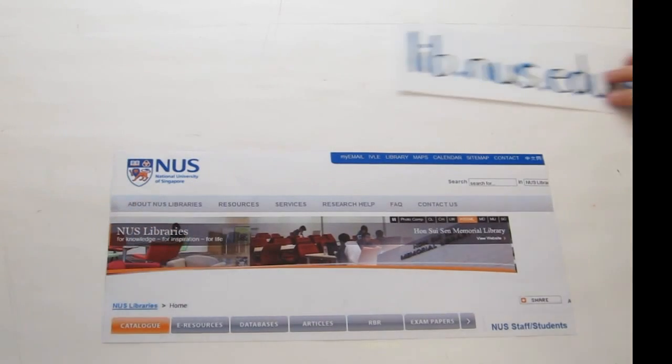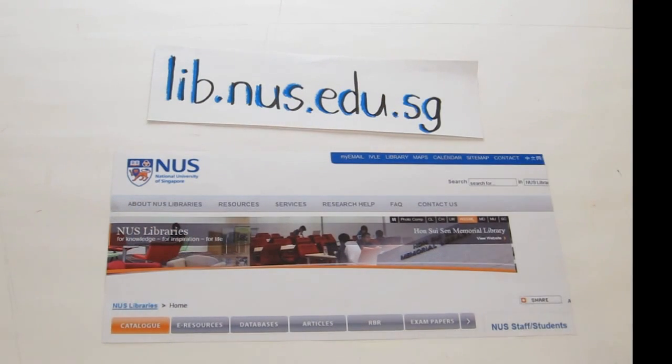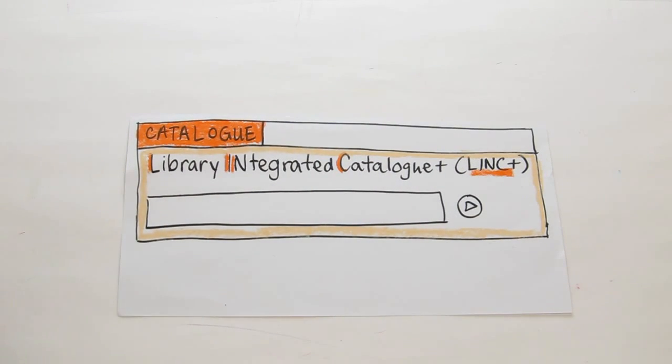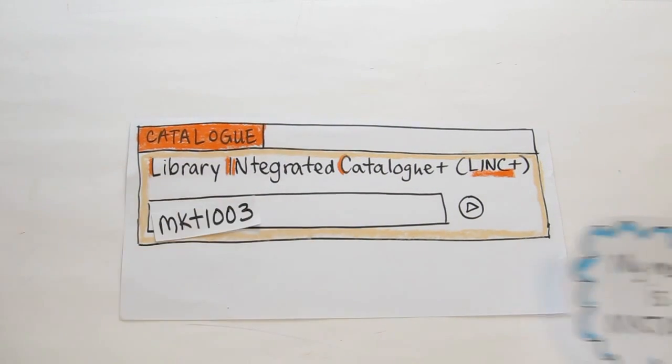To locate these books, first of all, go to the NUS Libraries website. Then, in the catalogue tab or Link Plus, search by your module or course number.